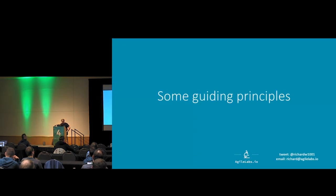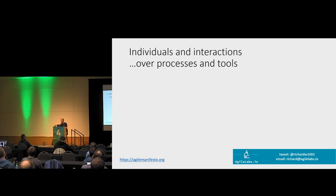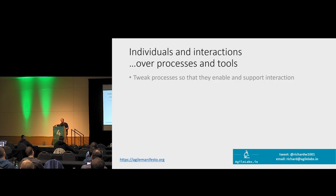The easiest way to avoid those things is to understand the principles behind why we do these things in the first place. All of these are straight from the Agile Manifesto. The first principle is individuals and interactions over processes and tools. Every team has processes — whether implicit or explicit — you all have a way of working as a group. If we're going to tweak our processes and tools, we want to do it in a way that supports interaction. Anything that encourages people talking to each other is probably a good thing; anything that replaces that is probably a bad thing.